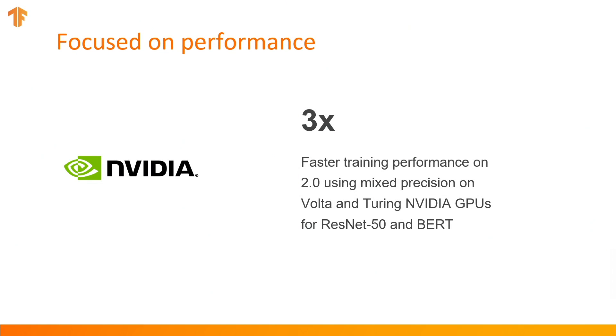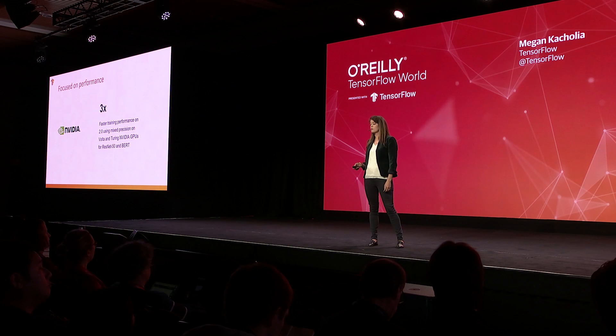Building and training a model is only one part of TensorFlow 2.0 — you need the performance to match. That's why we worked hard to continue improving performance. TensorFlow 2.0 delivers up to 3x faster training performance using mixed precision on NVIDIA Volta and Turing GPUs in a few lines of code with models like ResNet-50 and BERT. As we continue to double down on 2.0, performance will remain a focus. In 2.1, the next upcoming TensorFlow release, you can expect TPU and TPU Pod support along with mixed precision for GPUs.